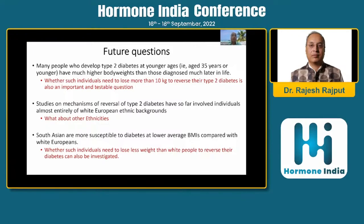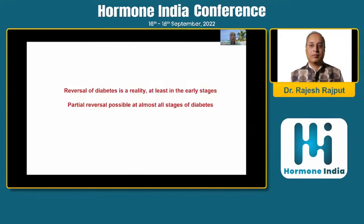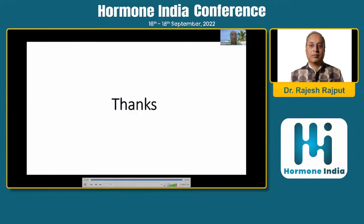To conclude: type 2 diabetes is a condition where people consume calories in excess, and more fat than the individual body needs gets deposited at ectopic places — in the liver, pancreas, and muscle — resulting in onset of diabetes. Negative calorie balance is known to cause reversal or remission of diabetes, at least when such patients are picked up in early stages. But partial remission or reversal is possibly achievable at probably all stages of diabetes. Thank you very much.